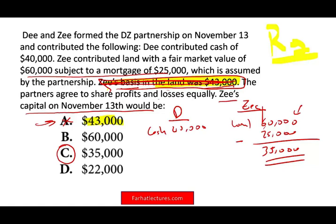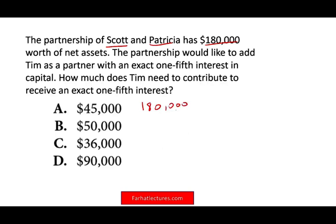They will try to throw at you the difference between how to treat the contribution between GAAP and IFRS. The partnership of Scott and Patricia has $180,000 of net worth — that's the partners together. The partnership would like to add Tim as a partner with an exact one-fifth interest. How much does Tim need to contribute?